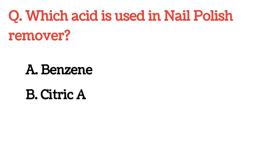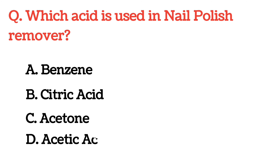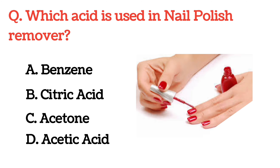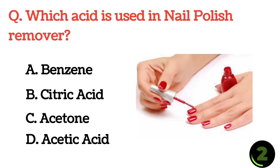Which acid is used in nail polish remover? The correct answer is Option A: Acetone.